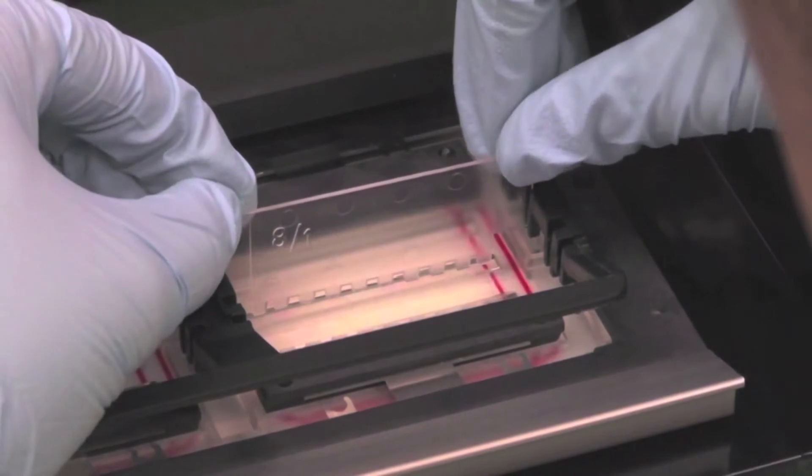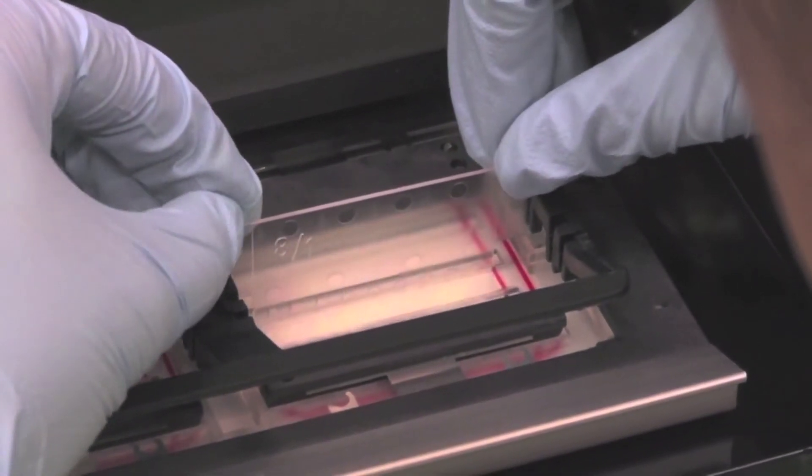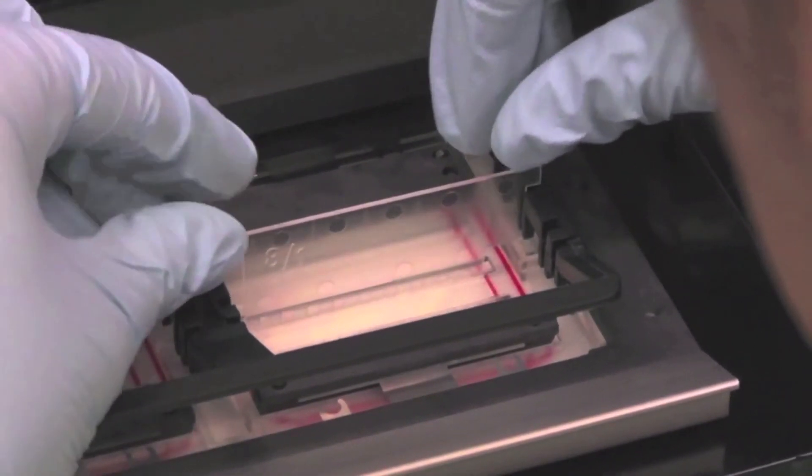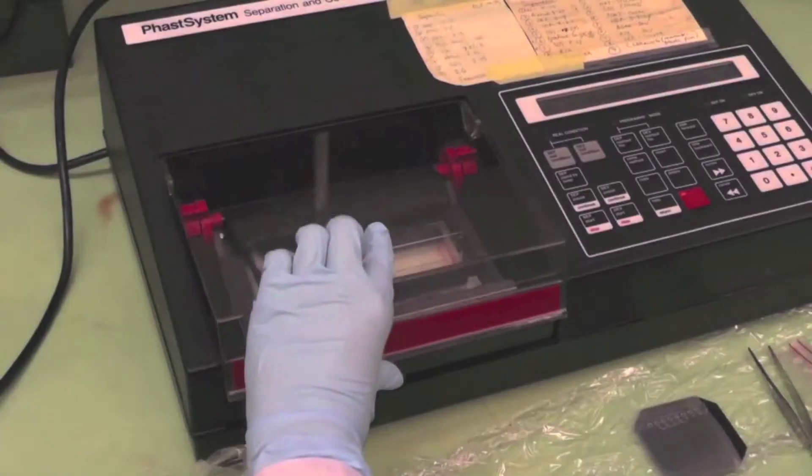Open the cover of the FAST system and gently place the sample applicator in the middle slot of the sample applicator arm and close the cover.